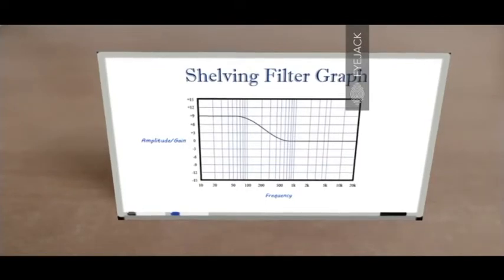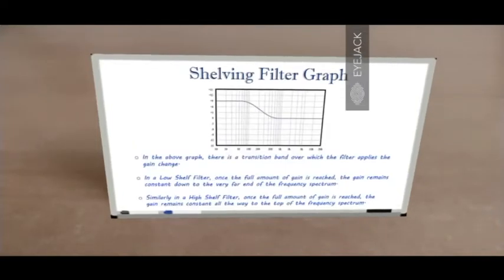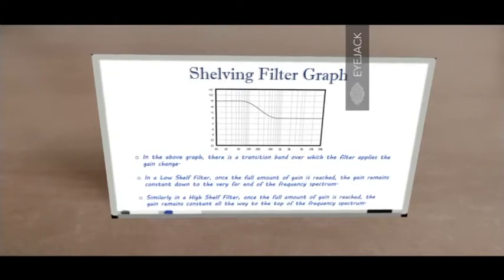The higher end has neither been boosted nor attenuated, just left untouched. Looking at the graph in more detail, we observe there is a transition band over which the filter applies the gain change. In this example, the filter is boosting the lower end frequencies from a level of 0 to a level of 9, and there is a gradual transition band — it's not abrupt.